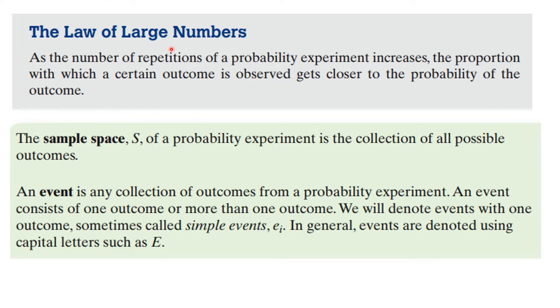The law of large numbers tells us that as the number of repetitions of a probability experiment increases, the proportion of a certain outcome is observed to get closer and closer to what we call the probability of the outcome.